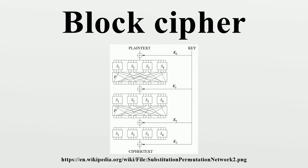Feistel Ciphers. In a Feistel cipher, the block of plaintext to be encrypted is split into two equal-sized halves. The round function is applied to one half using a sub-key, and then the output is XORed with the other half. The two halves are then swapped. Let the round function and sub-keys for the rounds be defined respectively. Then the basic operation is as follows: split the plaintext block into two equal pieces for each round. The ciphertext is computed accordingly, and decryption is accomplished by reversing the process.